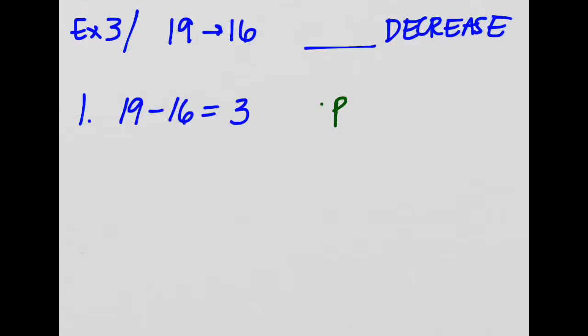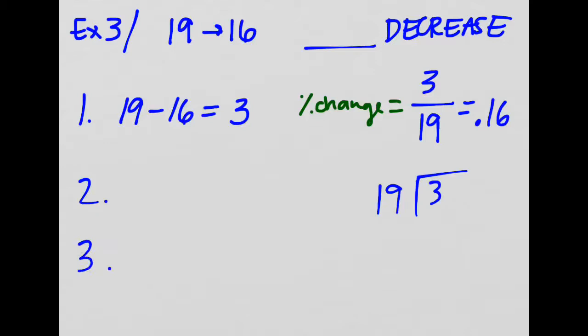Our percent of change is going to equal our amount of change and divide it by my original. Which one's my original here? It's not about whether it's bigger or smaller. It's which one comes first. So in this case, I'm going to need to divide by 19. You could take three and divide it by 19. And you should get 0.16. Now step three is to take my 16 hundredths, multiply by 100. And you get a 16% decrease.